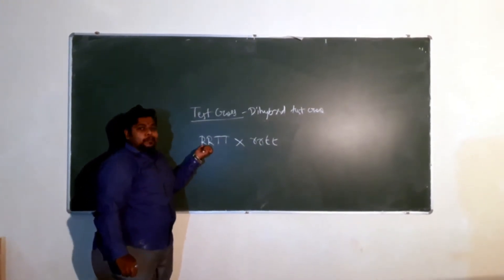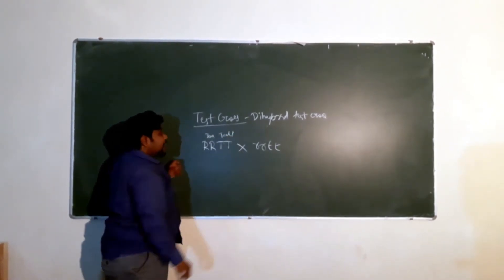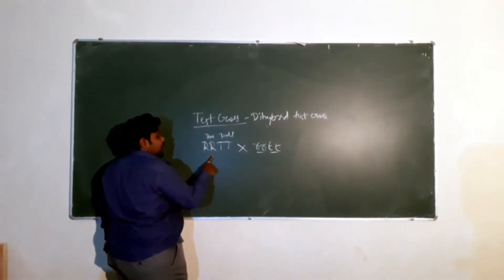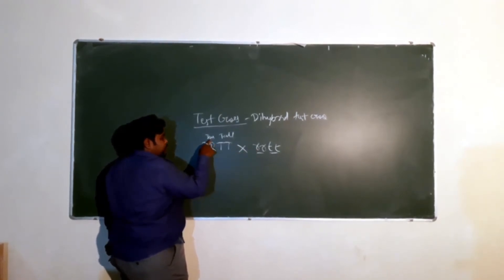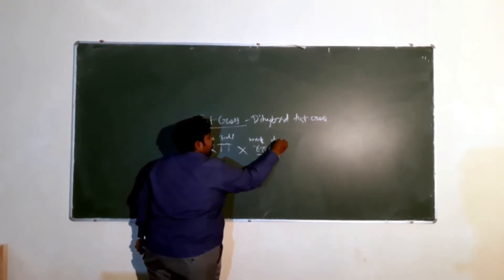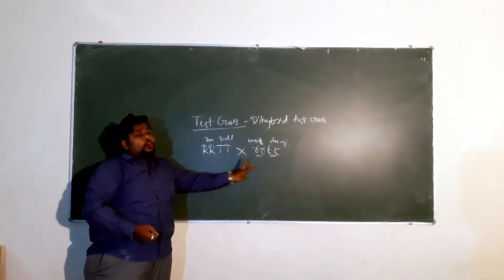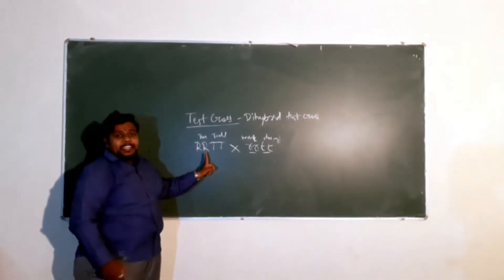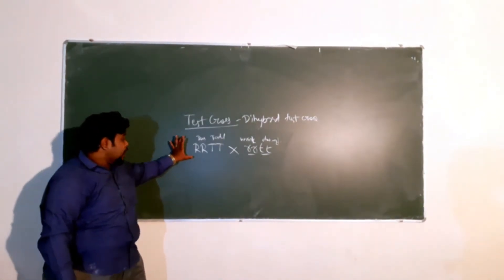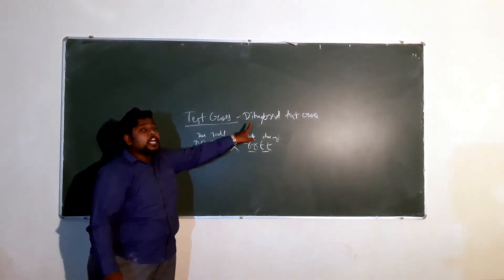Here capital R, capital R is again called roundness of a seed, and capital T, capital T is the tallness. So we are taking two characters here: round versus wrinkled, and tall versus dwarf. A cross made between two parents having two contrasting characters — in the monohybrid cross we have one character, like only capital R or only capital T, but in a di-hybrid cross we consider two characters at a time. This is what we call a di-hybrid cross.